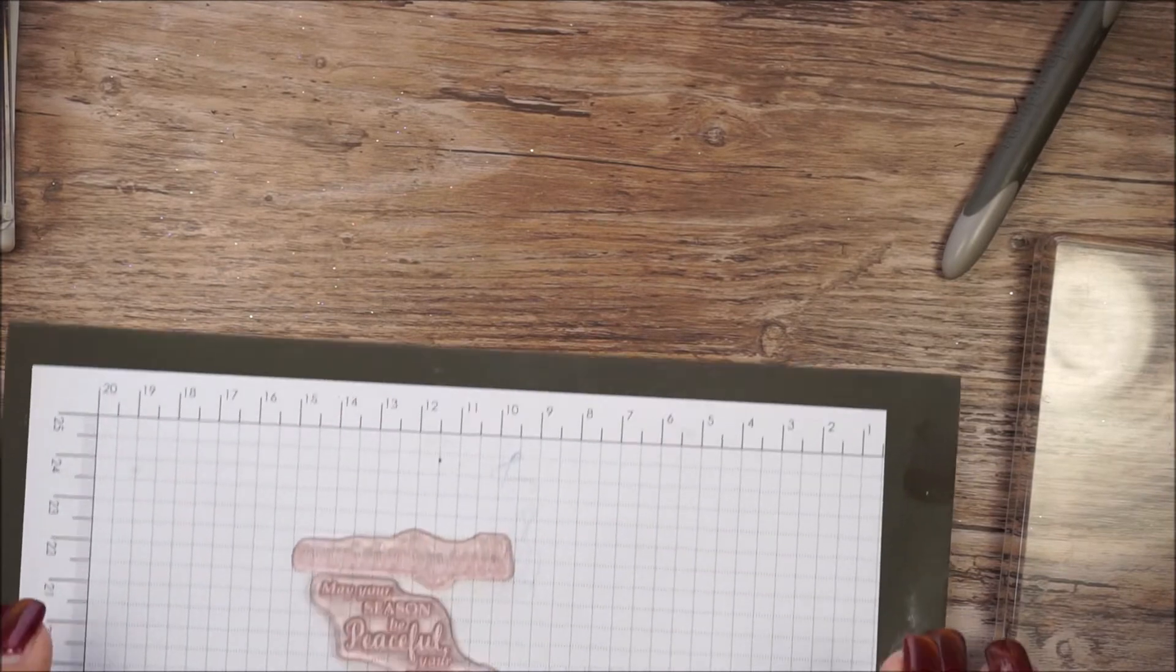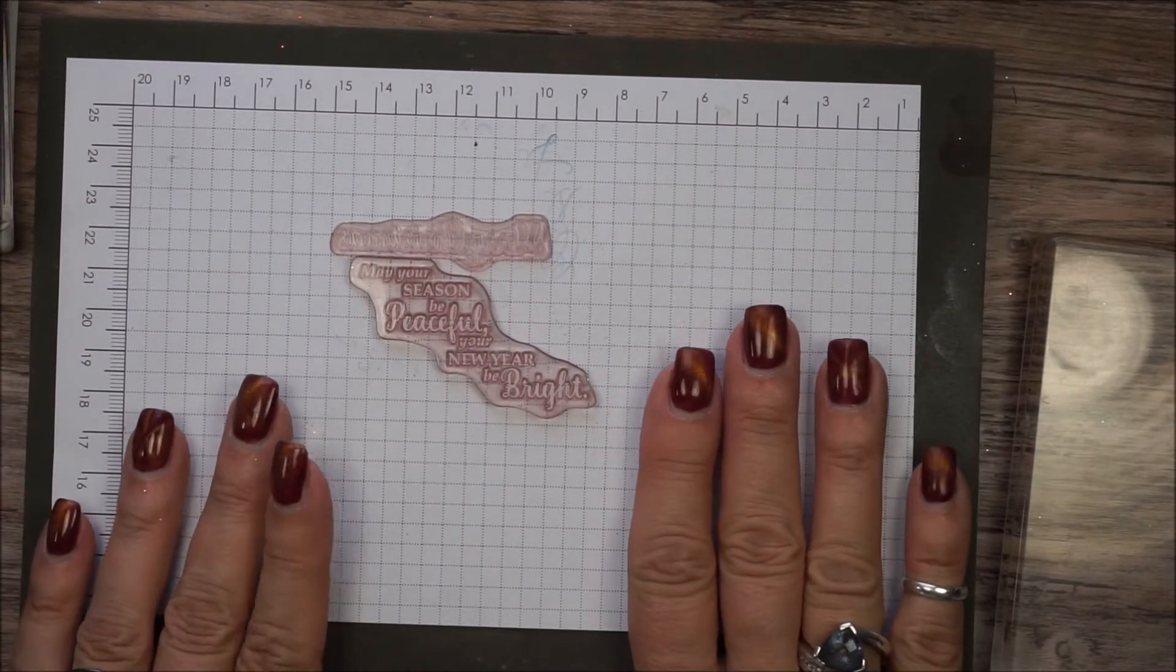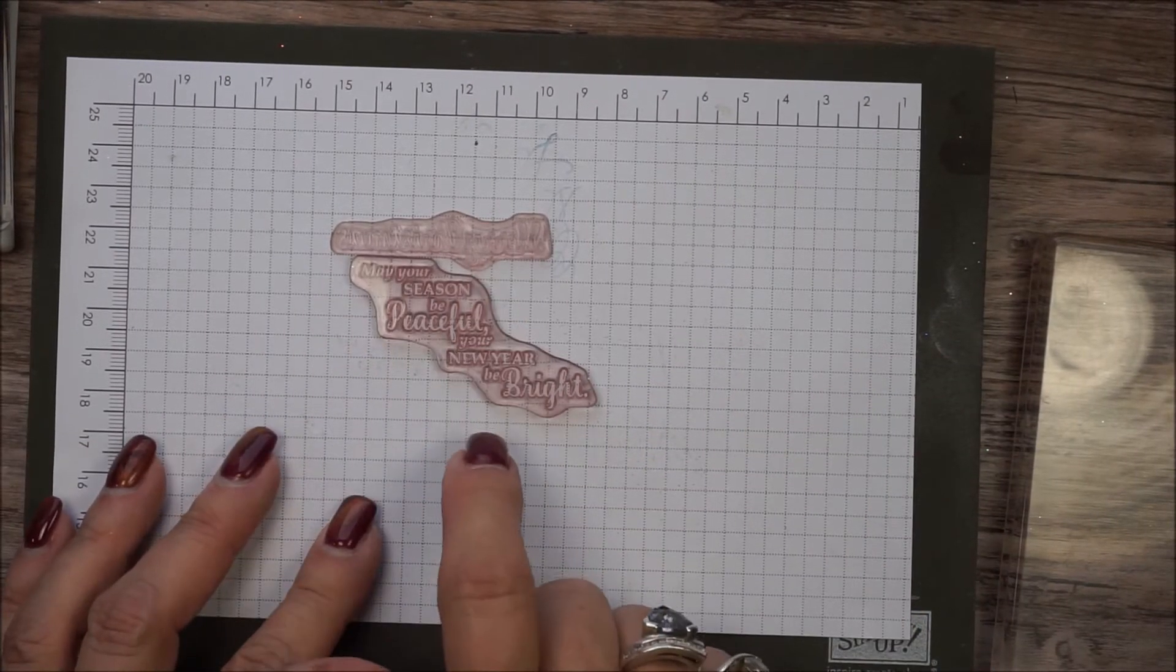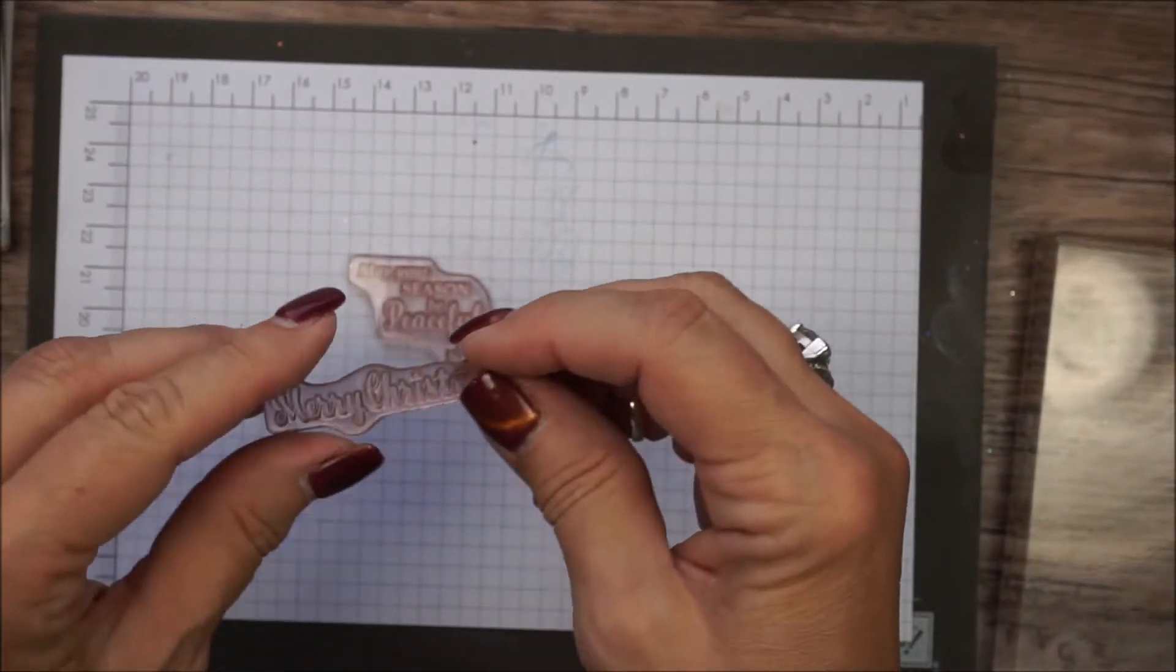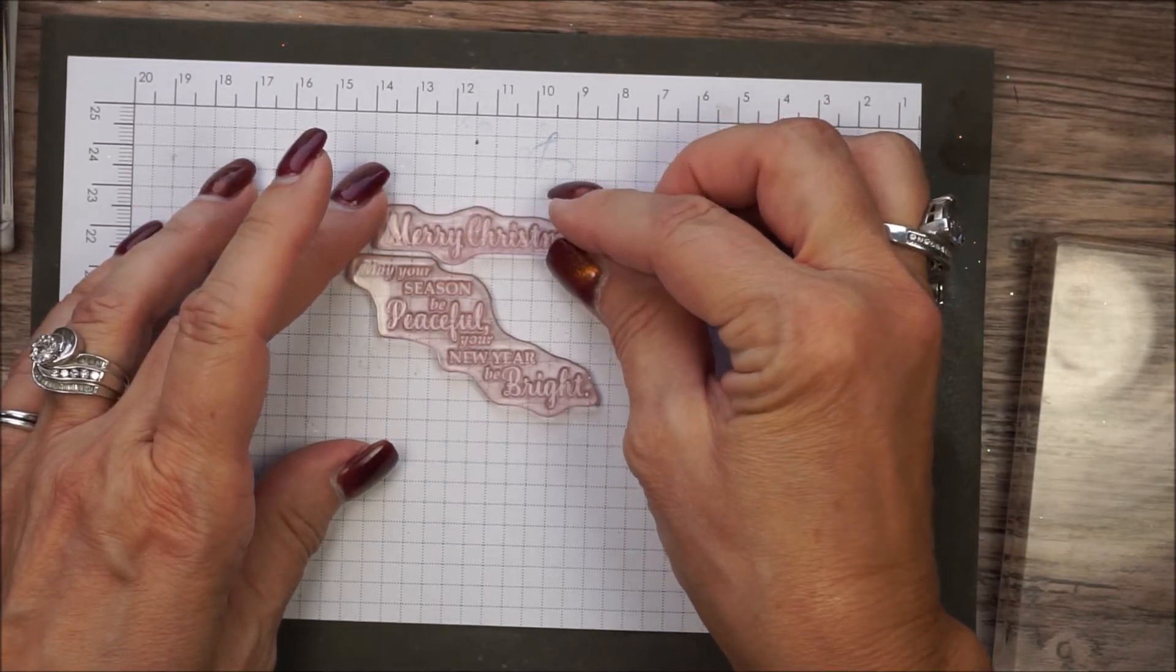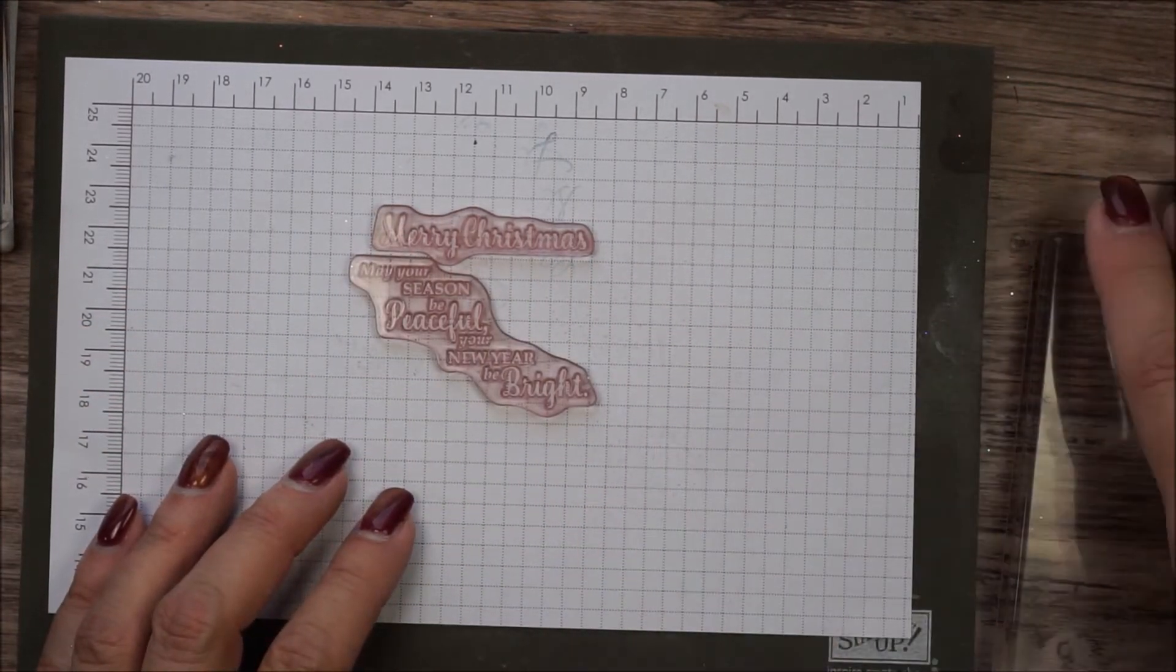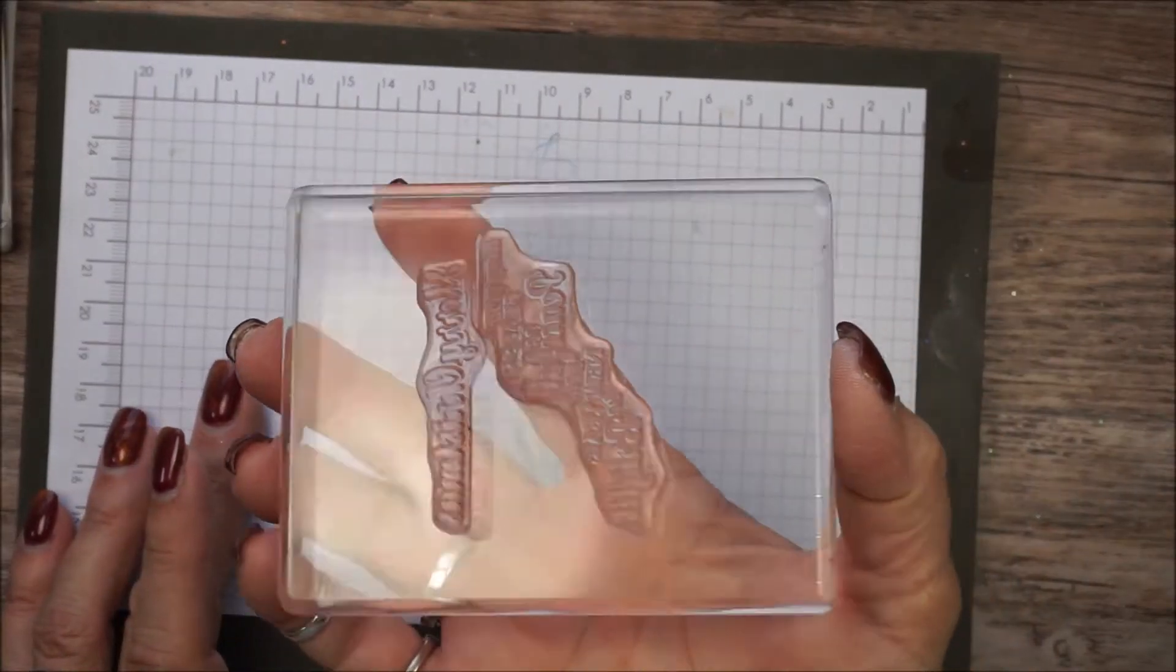Another tip is when you're lining up your stamps, I use my Stampin' Up! grid paper for a million and one things. One of them is to line up my... I got that one upside down. I just saw it. To line up my stamps and I use those lines on the paper to make sure that my words are all even. Then I just take my block and pick it up.